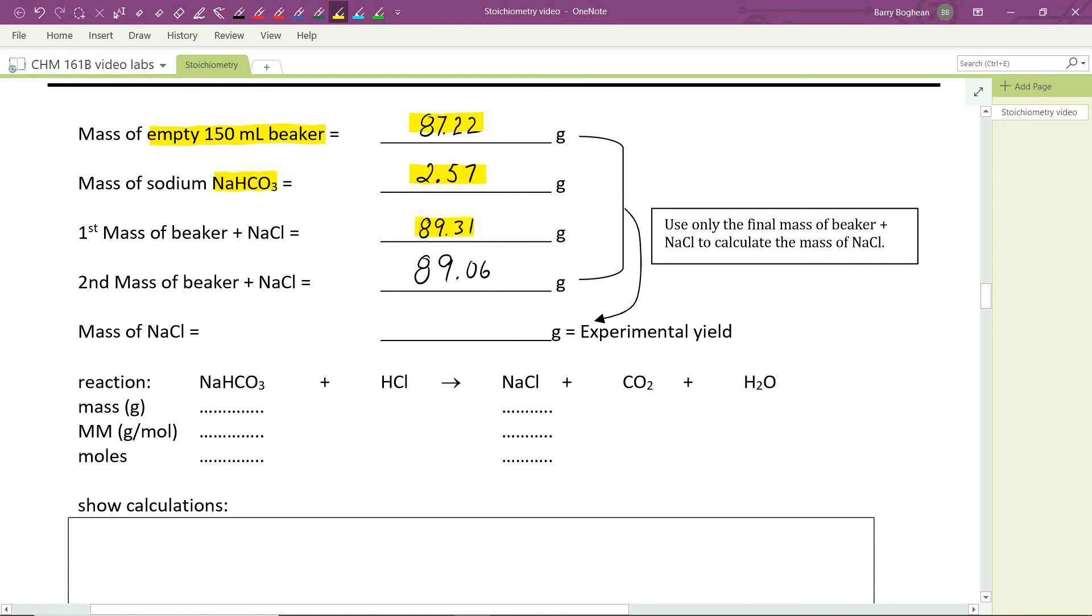89.31, well, that was not our first mass, but it was probably our third mass. It was an intermediate mass, which we're not going to use in our calculation. We used our final mass. Here it says second, but it was actually our fourth. Fourth and final mass, 89.06 grams.